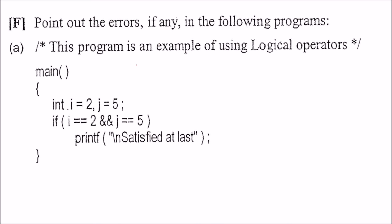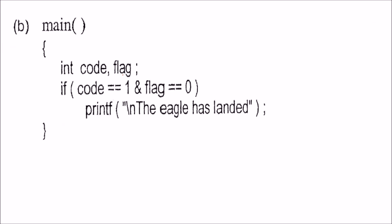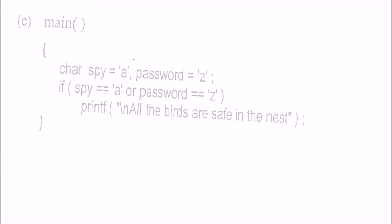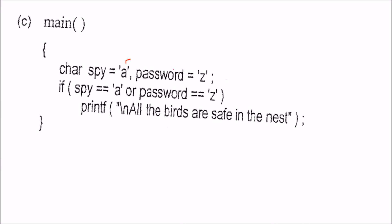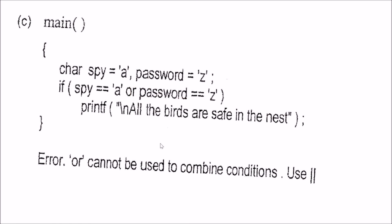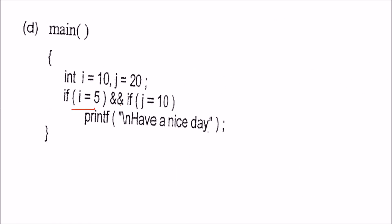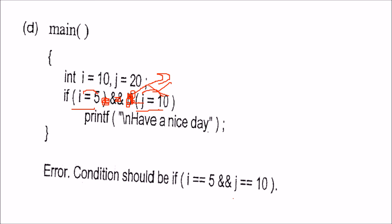Point out errors in programs using logical operators. i equals 2 and j equals 2 — no error, absolutely fine. flag equals 1 AND flag equals 0 — you must use double ampersand (&&), not single ampersand; that is the error. spy equal to 'a' OR password — OR with a word is not allowed; you must use the pipe symbol (||). i equals 10, j equals 20, if i equals 5 AND if j equals 10 — remove the second 'if'; it should be just i equals 5 AND j equals 10.